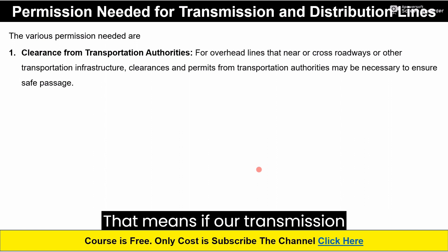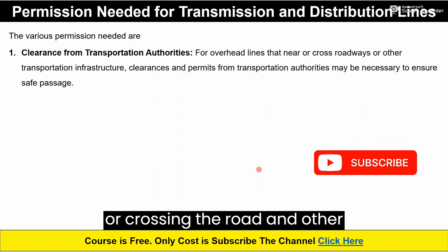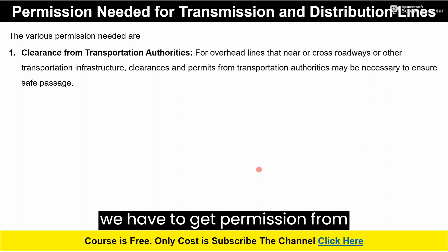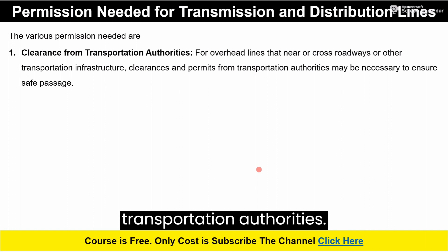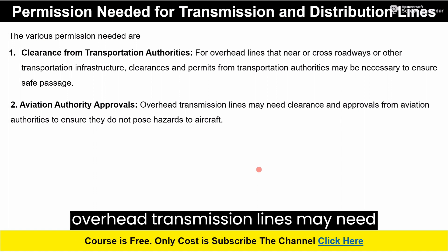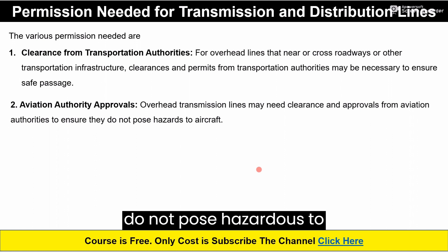That means if our transmission lines or distribution lines are near or crossing the road and other transportation structures like bridges, we have to get permission from transportation authorities. Second, Aviation Authority approval — overhead transmission lines may need clearance and approval from aviation authorities to ensure they do not pose hazards to aircraft.